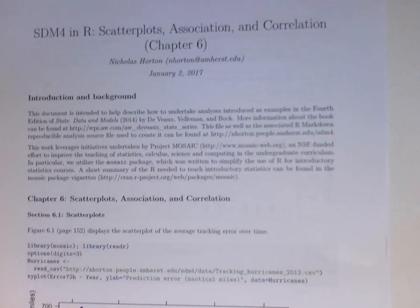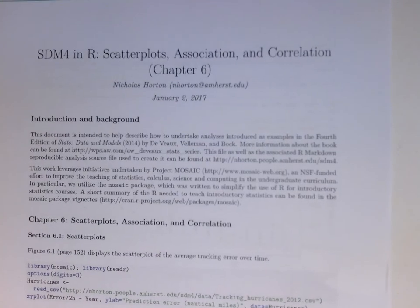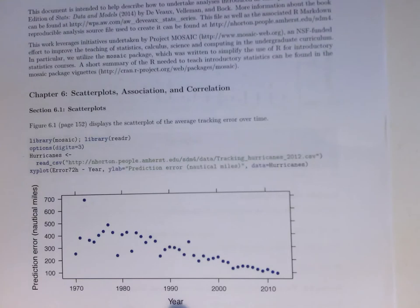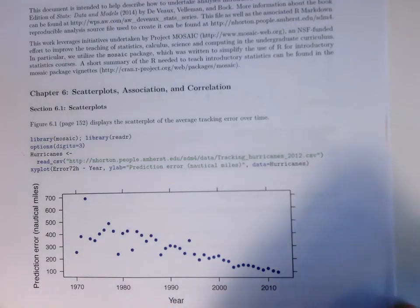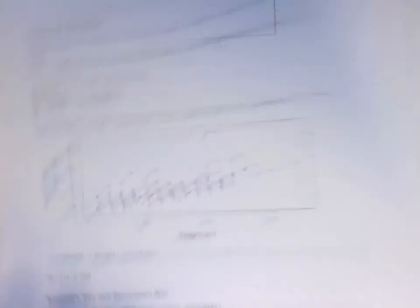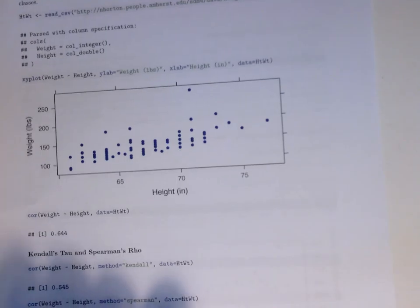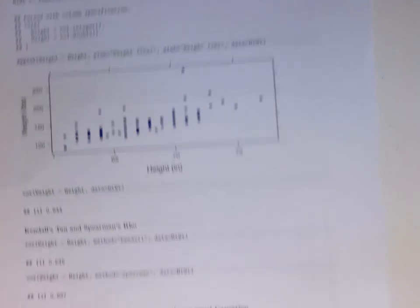It's very straightforward to be integrating these approaches in R. So chapter six of the SDM for R brings in that hurricane tracking data. Here we're going to be using the XY plot function as a way of generating the scatter plot. And then we can go ahead and do some other things with another scatter plot.